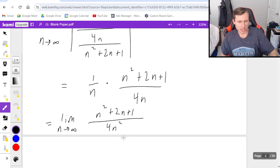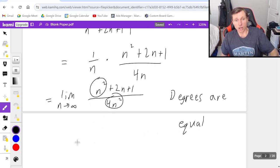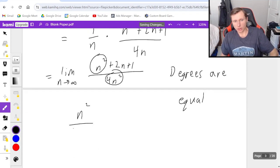So now I got to find the limit as n goes to infinity. Here, the degrees are equal, so I have a nice shortcut for us. You just divide the leading terms. So this is really just n squared over 4n squared. n squared cancels, and we get 1 fourth.